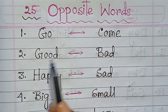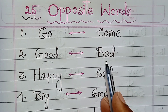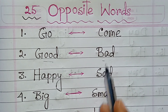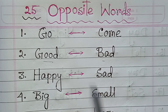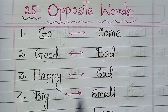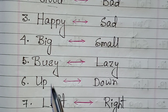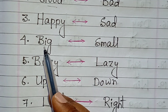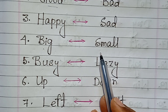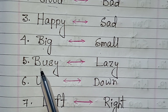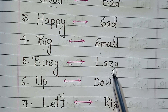Go, come. Good, bad. Happy, sad. Big, small. Busy, lazy.